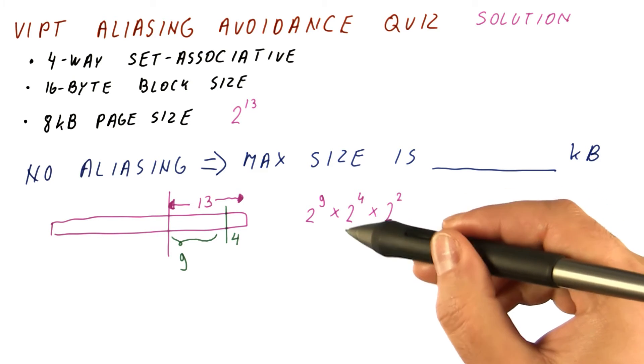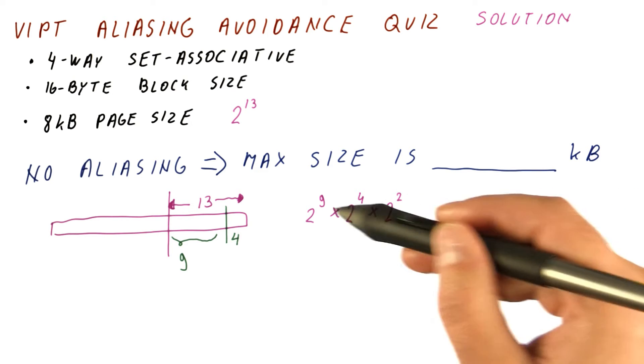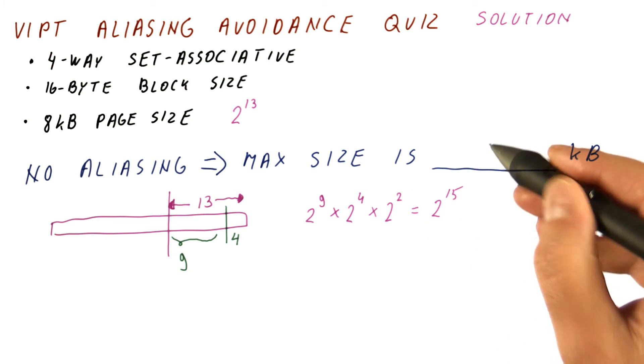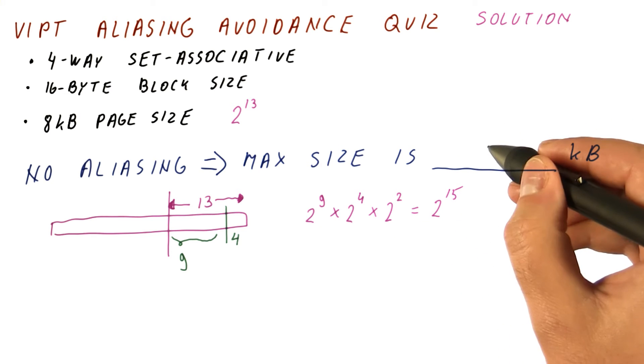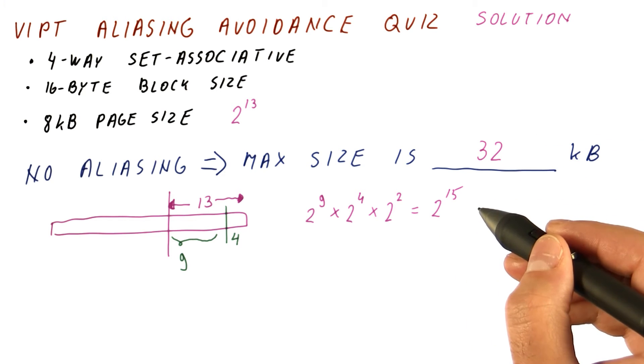So this is basically bytes per block, blocks per set, how many sets? And that amounts to 2 to the 15th bytes in the cache. So the answer here is 32 kilobytes, which is 2 to the 15th bytes.